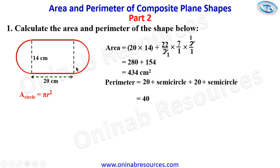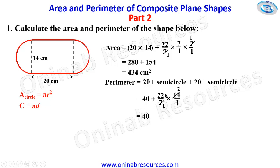This semicircle and this semicircle when added together give us a complete circle. We then find the circumference of the circle, which is pi times d. Our pi is 22 over 7 and our diameter is 14, so we multiply by 14 over 1. Seven goes into 7 gives 1, 7 goes into 14 gives 2. We then have 40 plus 44, which gives 84 centimeters, representing the perimeter of the shape. That's all for problem one.